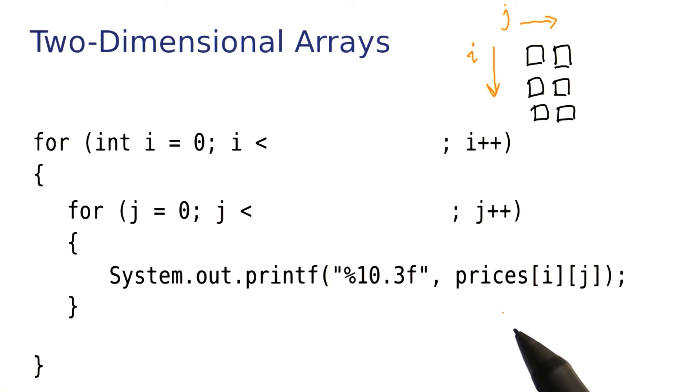When you have a row and column index, then we can access the element at the ith row and the jth column. So what you see over here is the general expression for an element at an arbitrary row and arbitrary column.